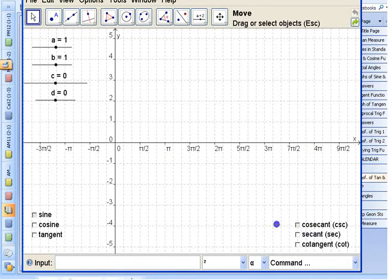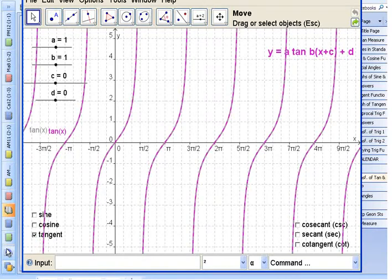If we look at the tangent graph, the tangent graph looks like that to start with. It has asymptotes at π/2, 3π/2, 5π/2. The first one is at 90 degrees or π/2, but they're π apart.